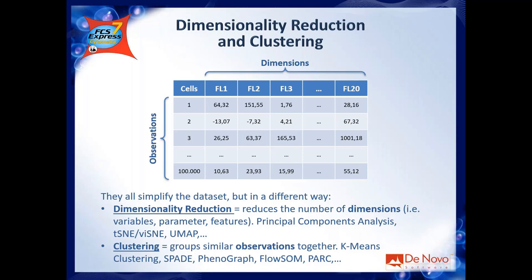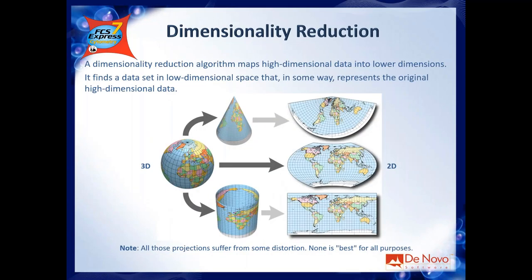Today we will focus on dimensionality reduction, specifically on tSNE. Dimensionality reduction tools map high-dimensional data into a lower-dimensional space. There is no limit in terms of how many dimensions you start with — you can start with 20 or even 200. The idea is that you reduce that number to simplify your dataset. What you see here is probably the first example of a dimensionality reduction approach — in the past it was quite hard, but today it is quite easy, and we can go from 100 dimensions down to two.